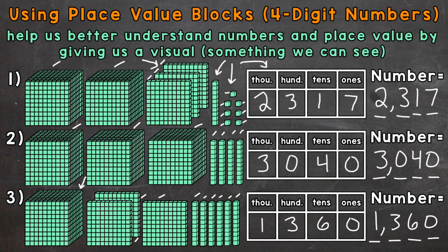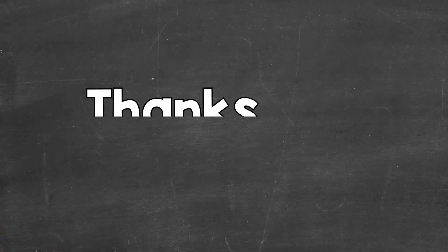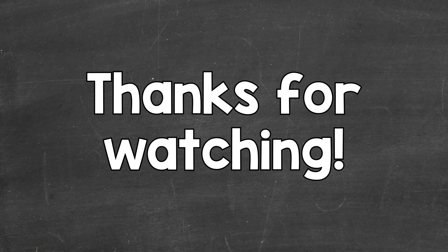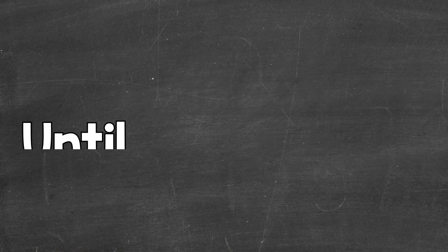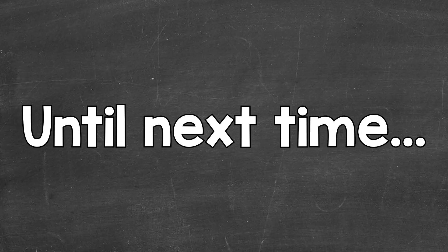So there you have it — that's how you use place value blocks to represent four-digit numbers. I hope that helped. Thanks so much for watching. Until next time, peace.